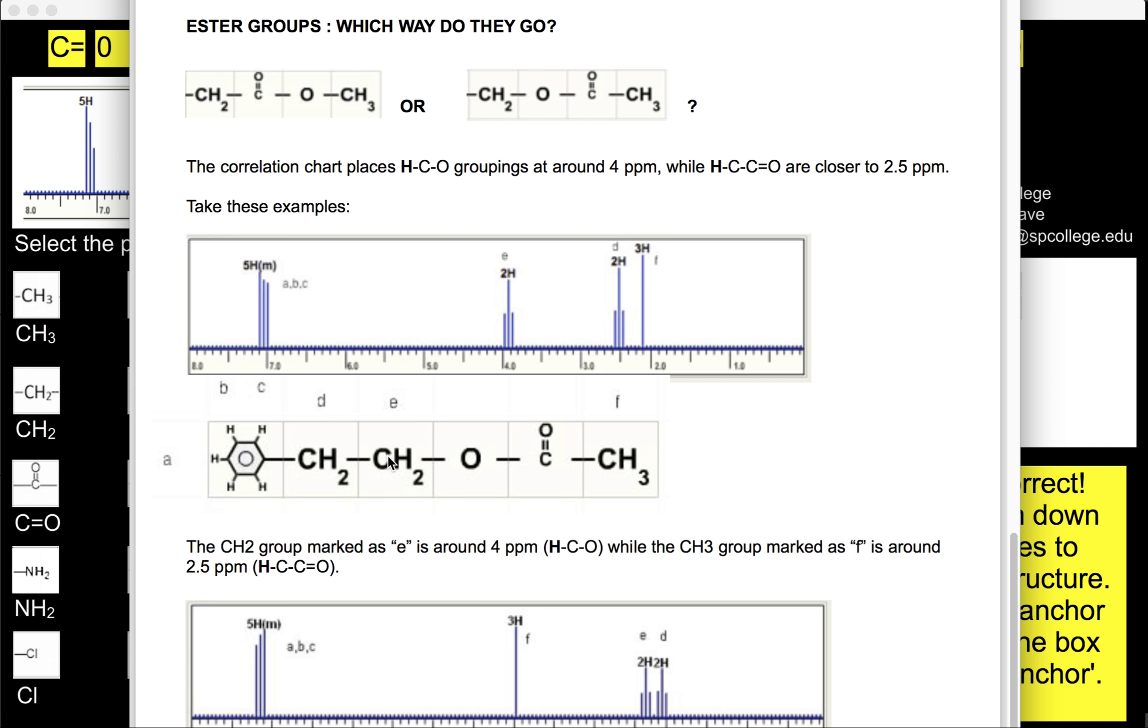We know that when something is directly connected to an oxygen, like we see here, CH2 is connected to the O. It's around four ppm. And this CH3 is connected to a C double bond O and that's going to be between two and two and a half ppm.